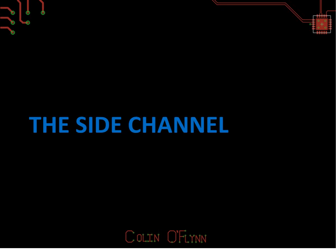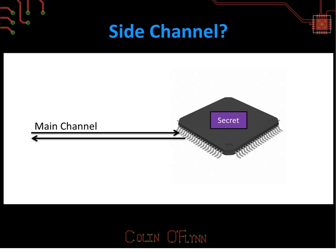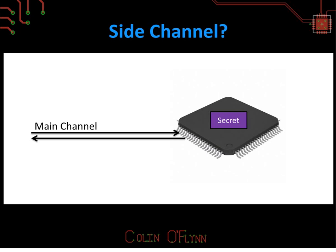So what is a side channel attack? The basic idea is that if we have a cryptographic device, it has a main channel, but it also has other ways you can get information from it. For example, a cryptographic chip on a chip-and-pin credit card has contacts used when you insert the chip into the reader. But back in 1998, it was first published that using power measurements of the device, you can see what the device is doing.